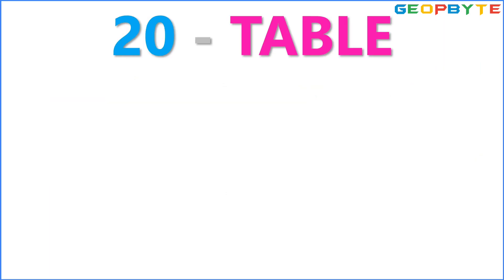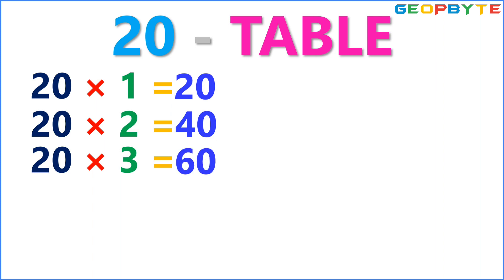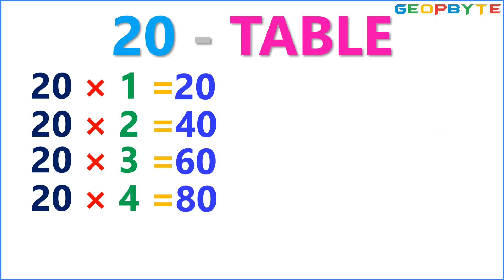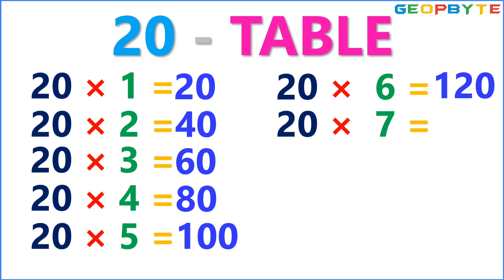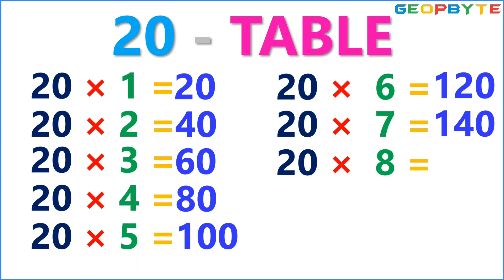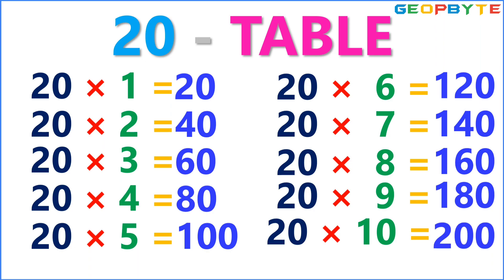Now, let us see the 20 table. 20 ones are 20. 20 twos are 40. 20 threes are 60. 20 fours are 80. 20 fives are 100. 20 sixes are 120. 20 sevens are 140. 20 eights are 160. 20 nines are 180. 20 tens are 200.